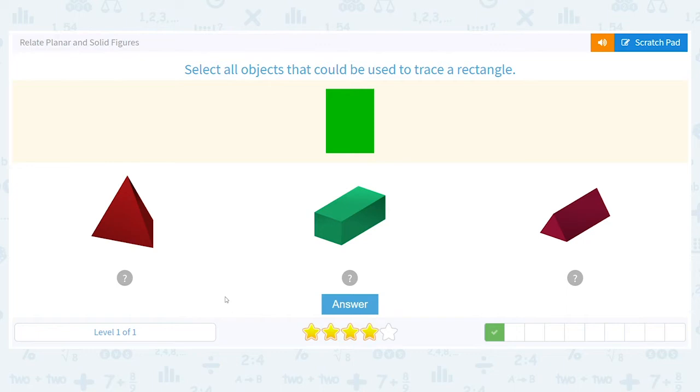Next, we have to select all objects that could be used to trace a rectangle. I see two that we could use.